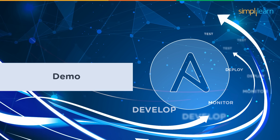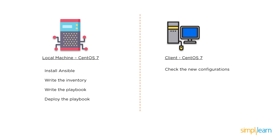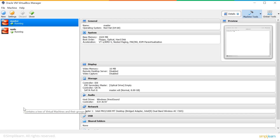And finally we reach the most exciting part of our tutorial — the hands-on. Before we move on to the actual hands-on, let me just brief you through what exactly we'll be doing. I'll be hosting two virtual boxes, both CentOS 7 operating systems. One would be my local machine and the other my node or the client machine. On my local machine, first I'll install Ansible. We'll then write the inventory and the playbook and then simply deploy this playbook. On the client machine, we just need to check if the configurations mentioned in our playbook are made correctly.